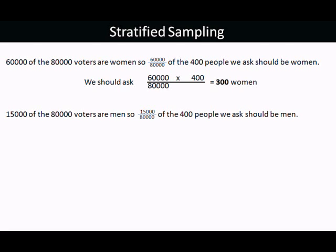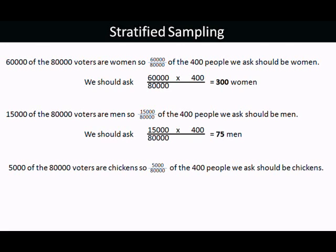And then 15,000 of the 80,000 voters are men, so 15,000/80,000 of the 400 people we ask should be men. So 15,000/80,000 of 400 comes to 75. And then finally the rest of them. So we've got three groups and we ask 300, 75, and 25, which makes our 400.